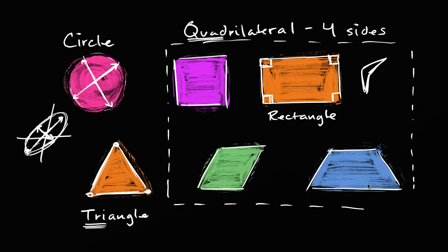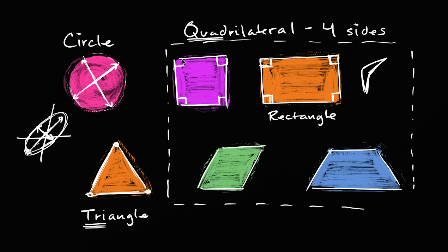Just to be clear, this one down here is not a rectangle. Notice this corner right over here — if I tried to put a little square here, the two sides aren't on two sides of the square, so this is not a square corner. So this is not a rectangle. All four corners need to be square. This one also is not a rectangle — the corners are not right angles. But this one — I can put little squares in the corners, all the corners are right angles — so this actually is a rectangle as well. These are both rectangles.